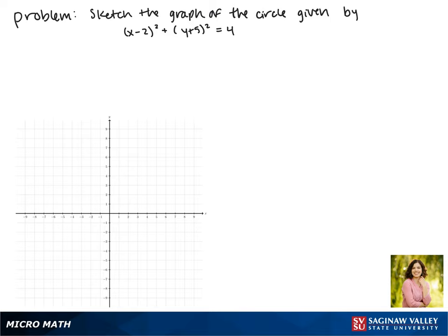Today we'll be sketching the graph of the circle given by the equation x minus 2 squared plus y plus 5 squared equals 4.